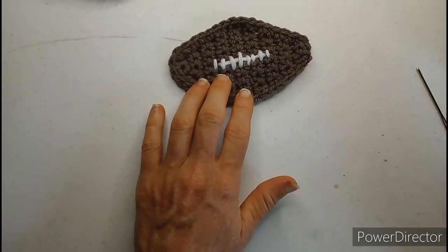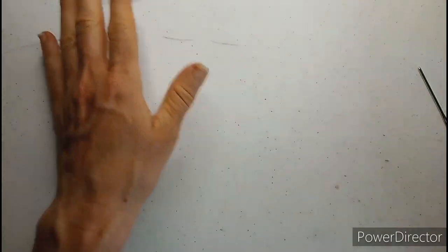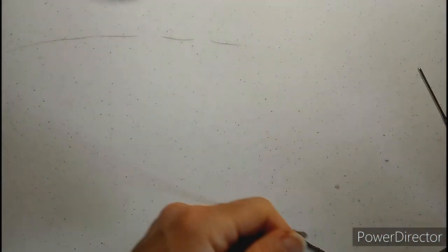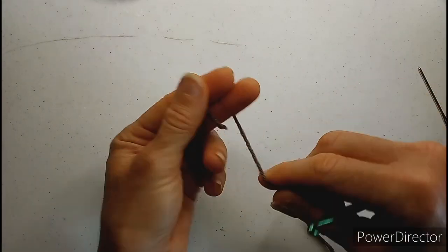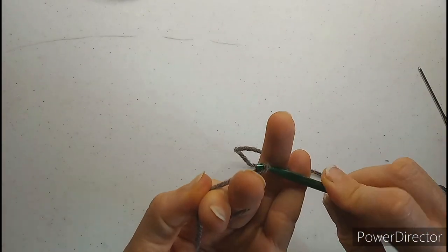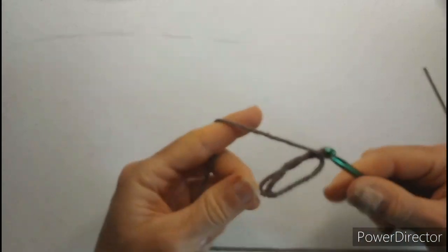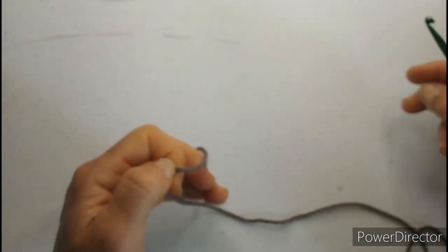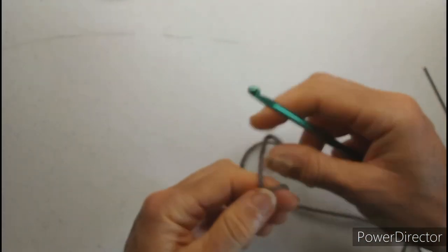I think I want to show you though, what I'm talking about with the single crochet two together. So let me just, this is just like a sample though. This is not the actual pattern, but let's just say, I'm not going to do a magic round, I'm just going to do a slipknot.